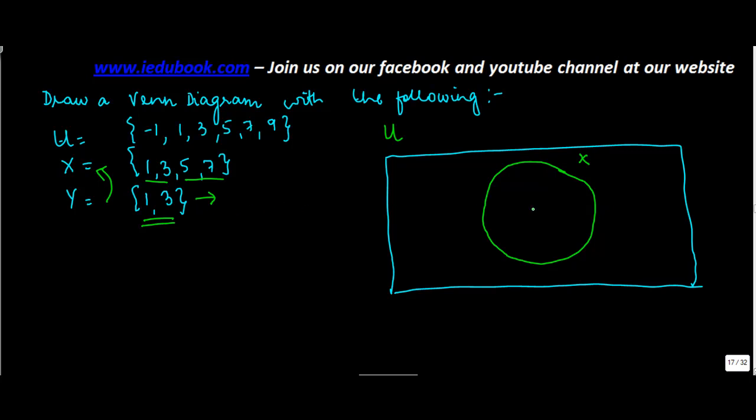But if 1, 3 is also included here, then the subset Y has to lie within X. Or you make another circle and call it as Y. So Y will contain 1 and 3.